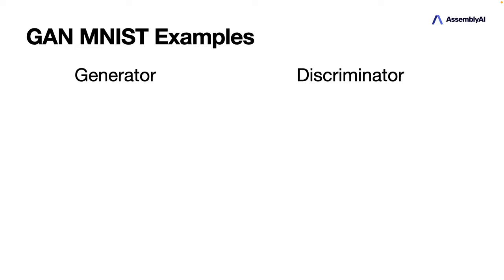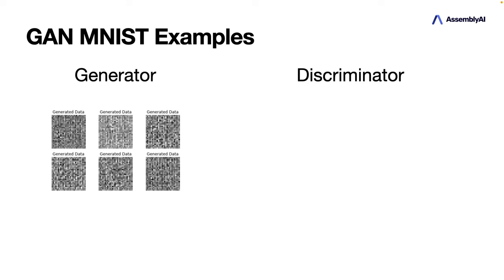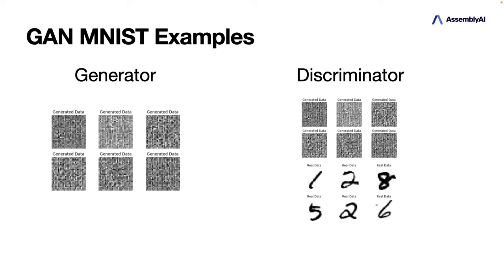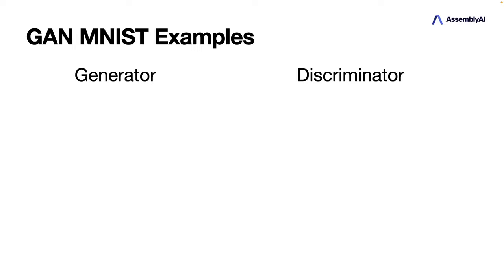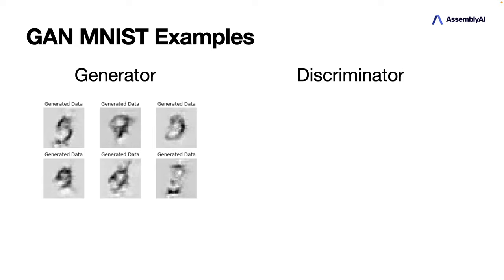Both sides play against each other and get better and better. In the beginning they don't know anything, so they are randomly initialized. The generator just produces noise — random data that might look like static. The discriminator looks at this, can also look at real data and compare it, and might easily say this is fake. Training continues, the generator comes up with new data, and the discriminator can still say it's fake.